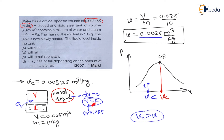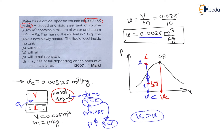At constant volume, heating causes pressure to increase. So keeping volume constant, we move from state 1 to state 2 by increasing pressure. Inside the liquid-vapour dome, the mixture transitions from liquid plus vapour at state 1 to liquid state at state 2. This means the liquid level inside the tank is increasing — the answer is option A: will rise.